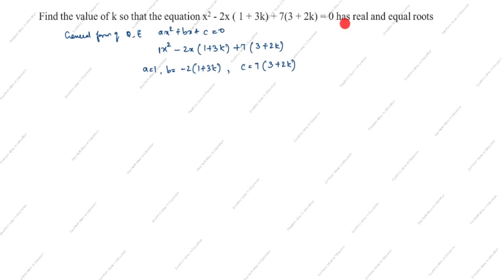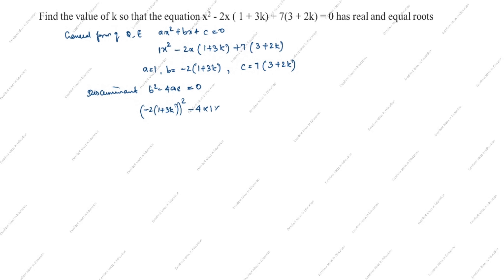What is given in this question — has real and equal roots. Real and equal roots means discriminant b squared minus 4ac is equal to 0. What is b? The value is minus 2(1 plus 3k). Squared, minus 4 into a, which is 1, into c, which is 7(3 plus 2k), equals 0.